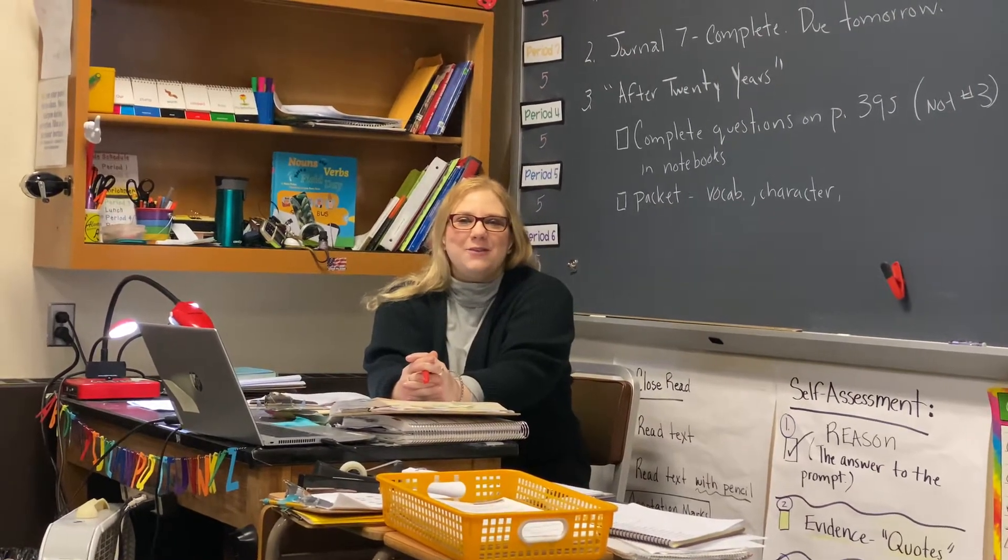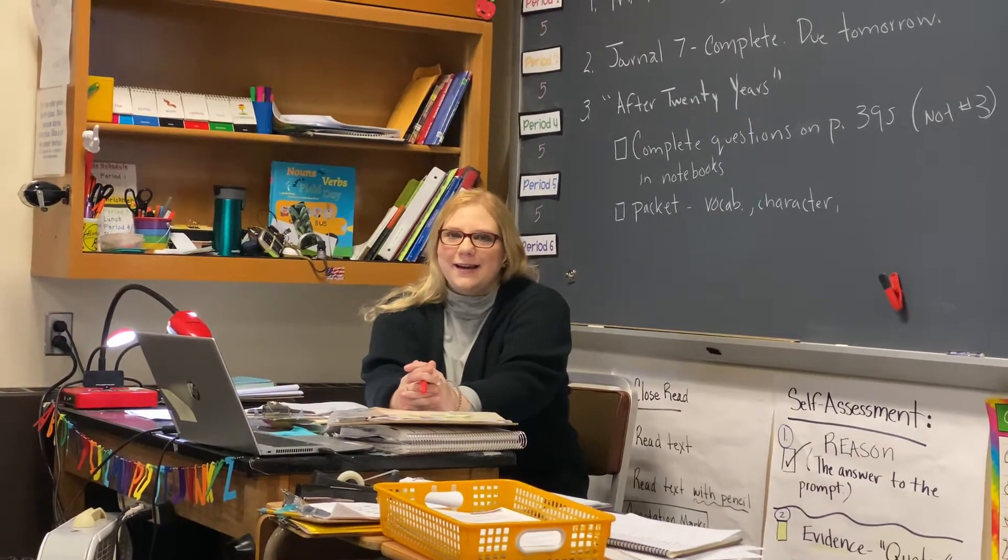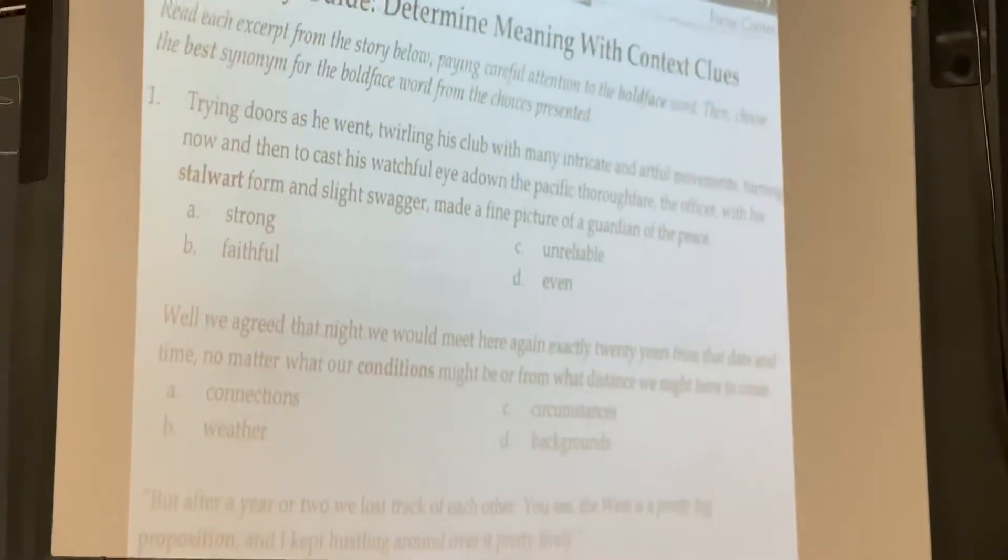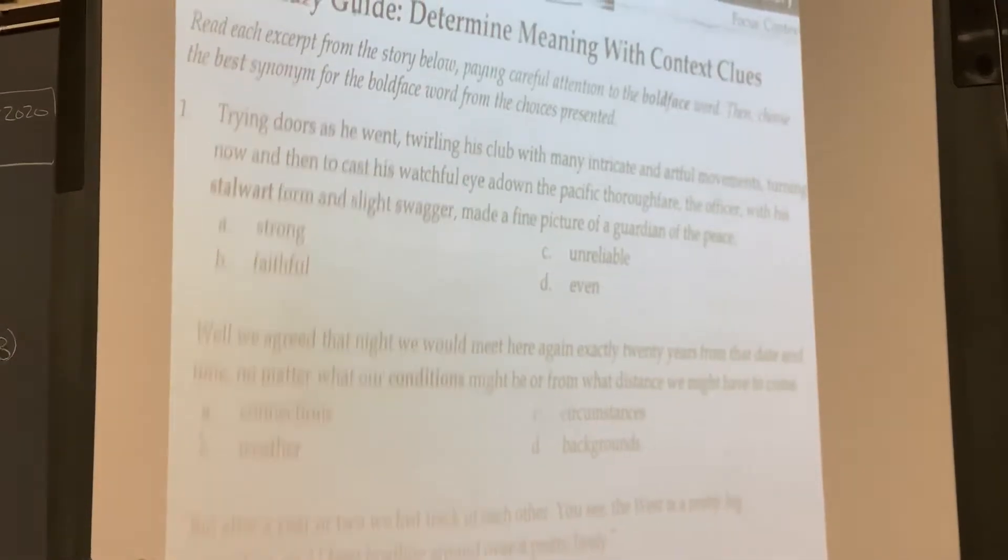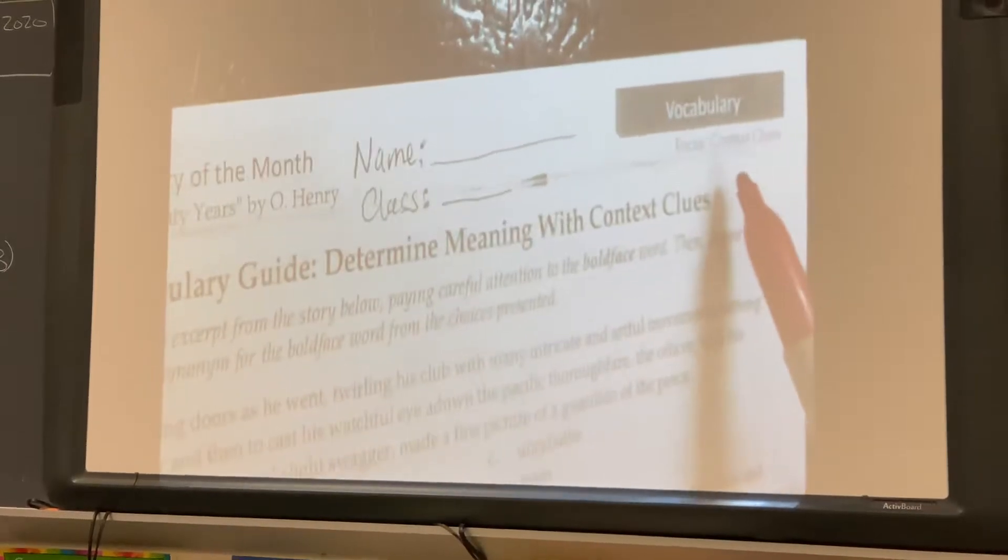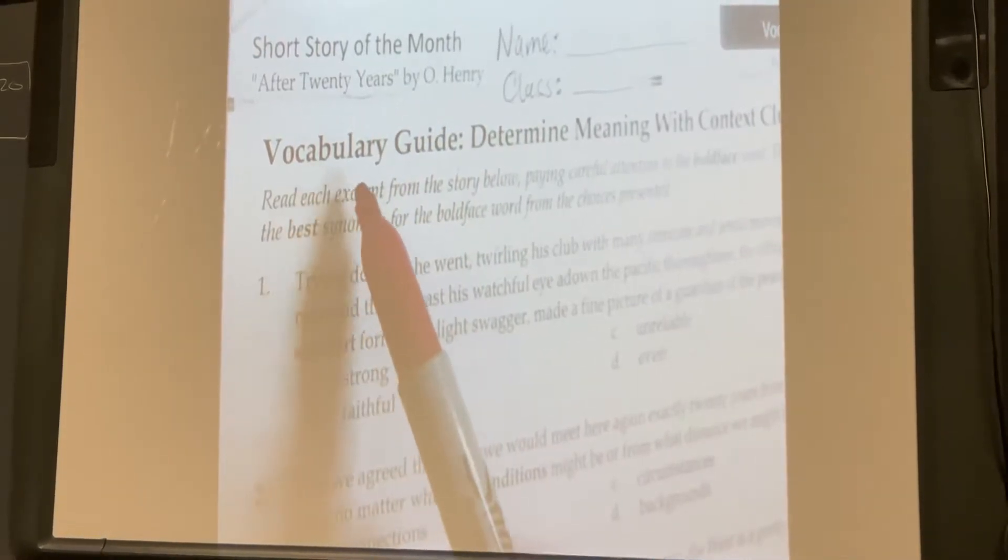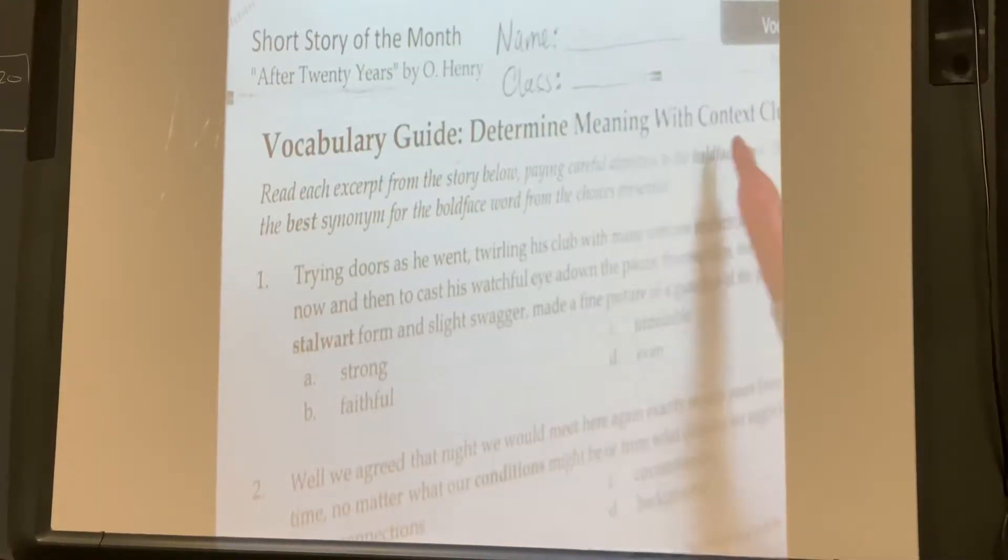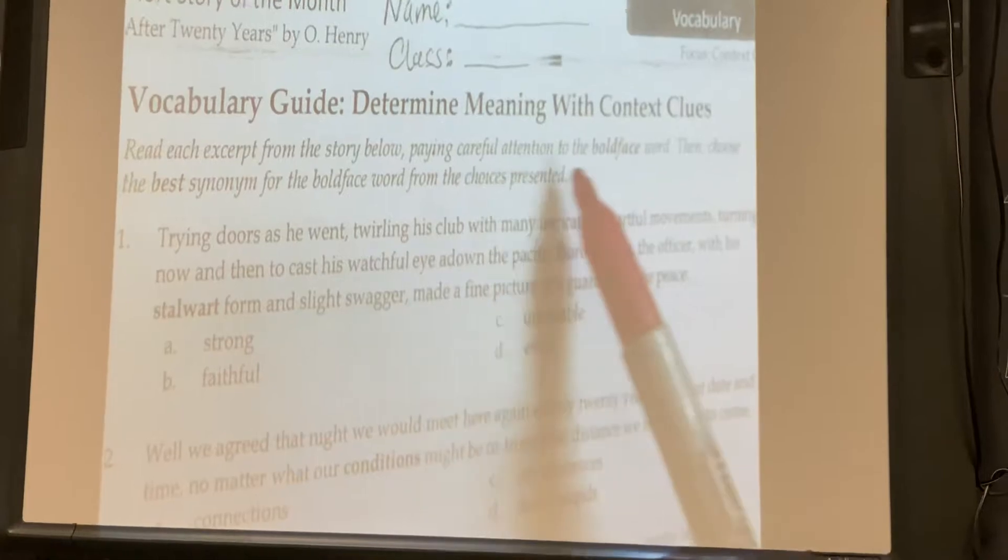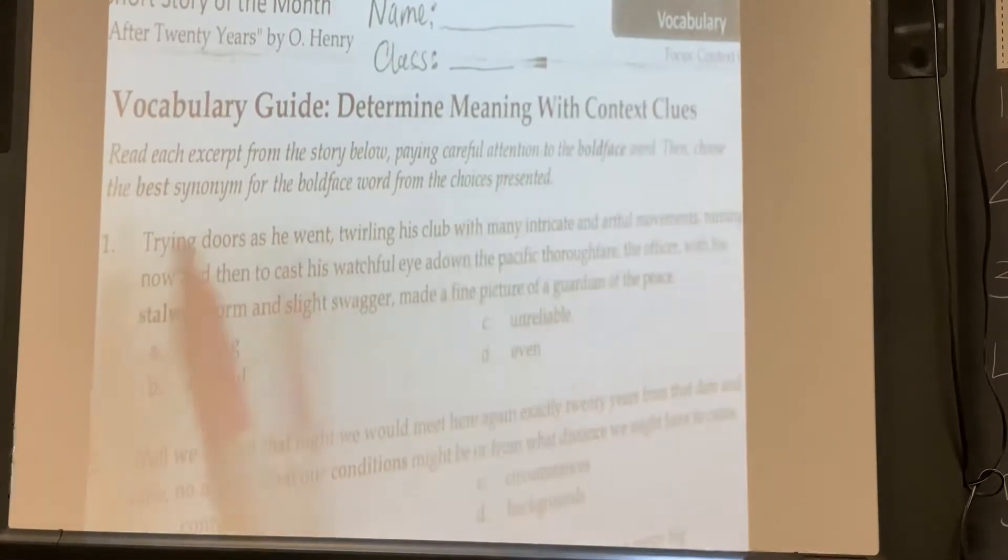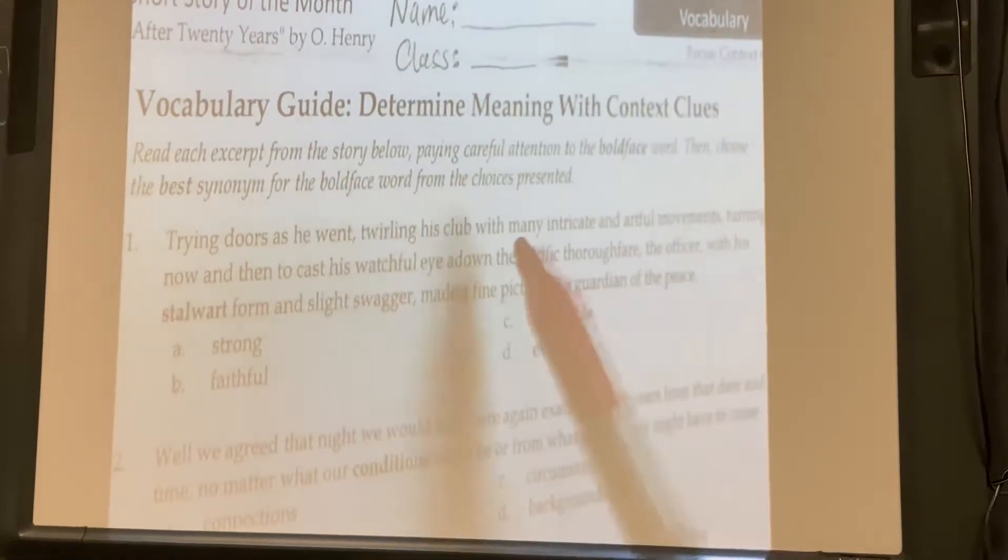Hi, Ms. Cyclin here with Middle School Language Arts 7. Today we're going to be going over a video for After Twenty Years for the vocabulary. So we're going to look up at the screen and review this. Please check your work as we check it together. The handout is Vocabulary Focus or Context Clues. The short story is After Twenty Years by O. Henry. Vocabulary Guide: Determine Meaning with Context Clues. Read each excerpt from the story below, paying careful attention to the boldface word. Then choose the best synonym for the boldface word from the choices presented.